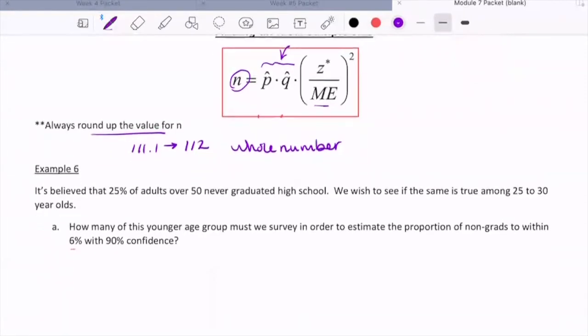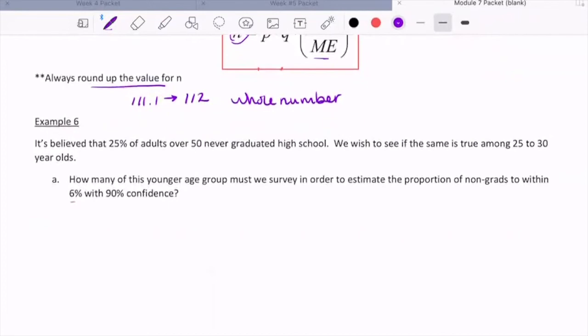Now let's take a look at example six. And the more examples of these types of problems that you see and do, you will start to feel more comfortable with this type of computations. Example six says it's believed that 25% of adults over 50 never graduated high school. We wish to see if the same is true among 25 to 30 year olds. So what we're given here is this 25%. That's going to be the assumed population proportion that we're going to want to test. So that means for us p is going to be 0.25. We're going to see how likely it is that the proportion is 0.25. So we're going to start with p equals 0.25 in our calculations. So this would mean that q is 0.75.